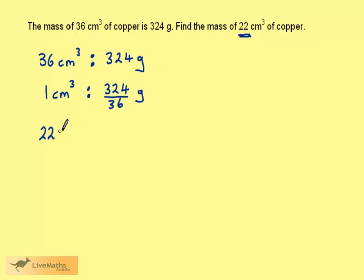22 cm³ is going to be 22 times 324 over 36 g.